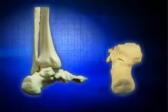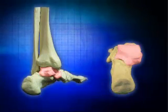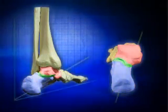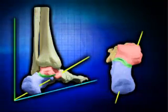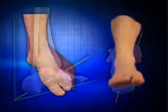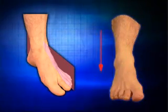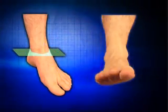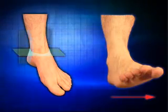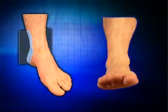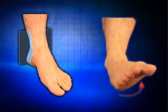The most crucial area is the subtalar joint, which is a triplane motion joint and comprises motion in three planes. In the sagittal plane there is dorsiflexion and plantar flexion. In the transverse plane there is abduction and adduction. And in the frontal plane there is eversion and inversion.